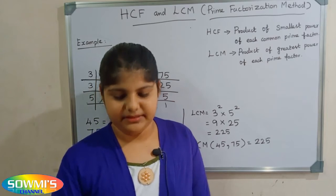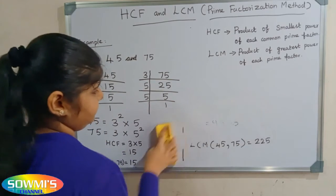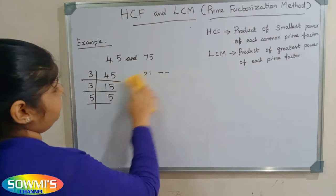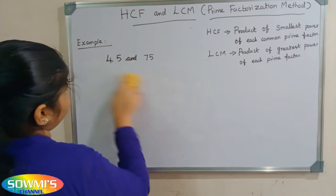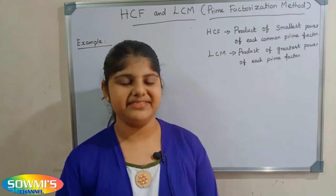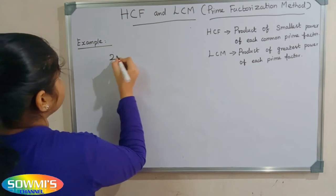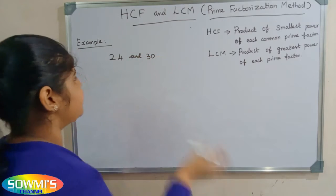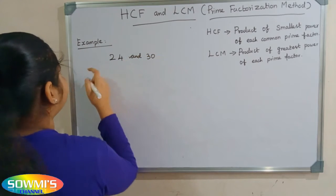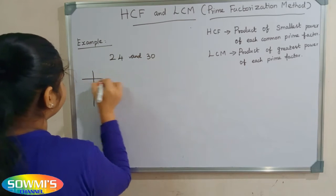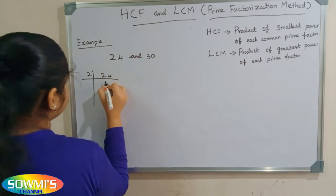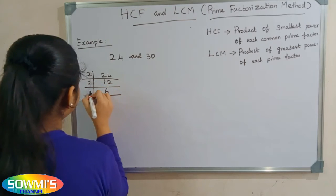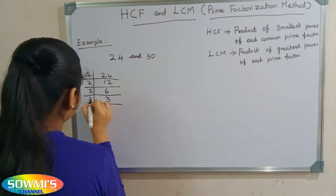Next we will take one more example. We can take 24 and 30. First we will find the prime factors of 24. 2 twelves are 24, 2 sixes are 12, 2 threes are 6, 3 ones are 3.